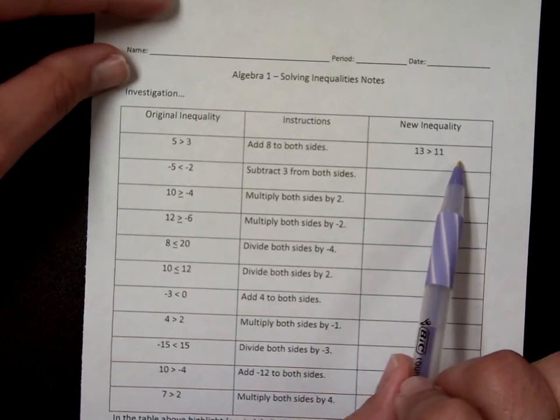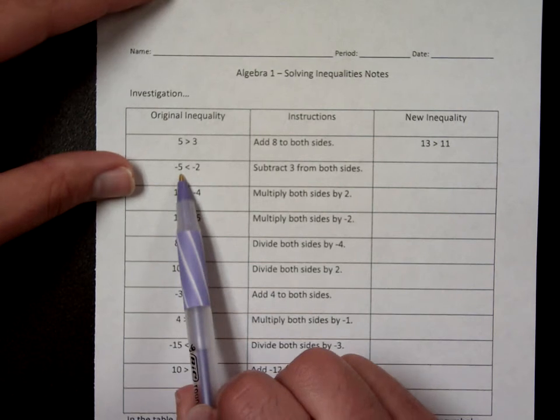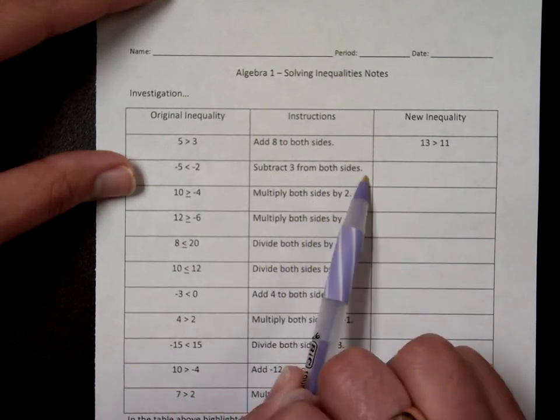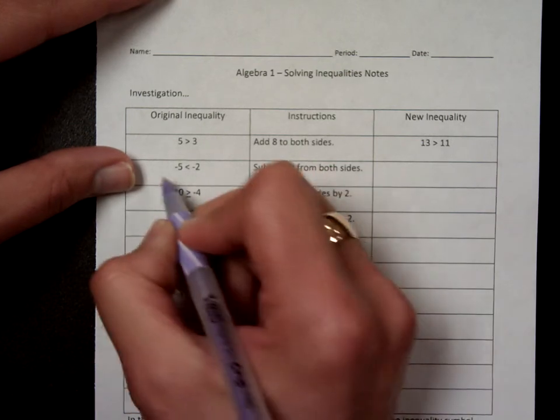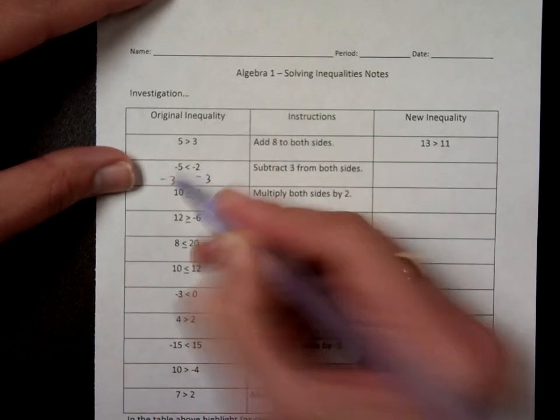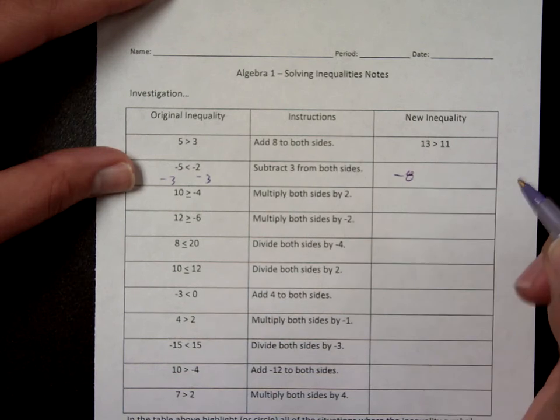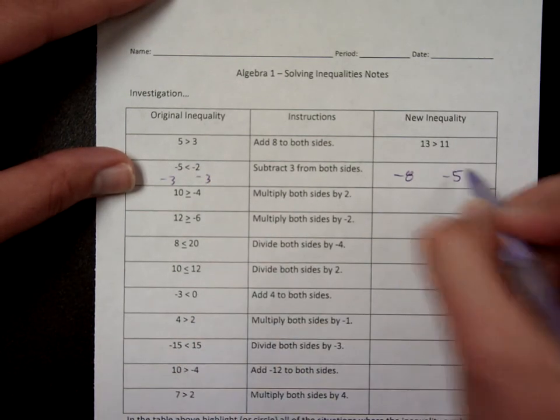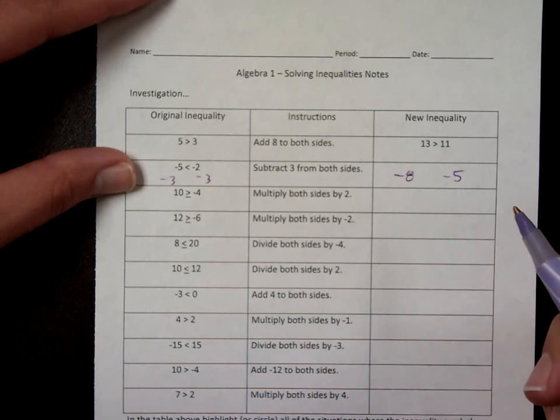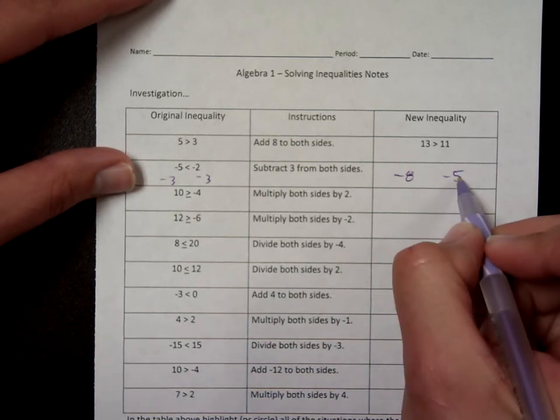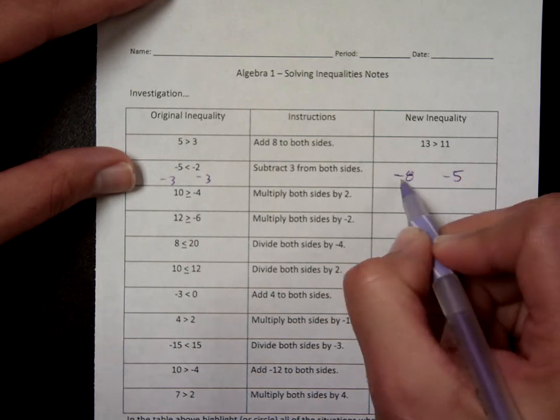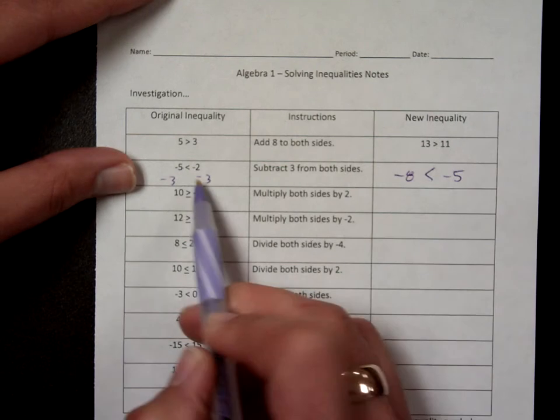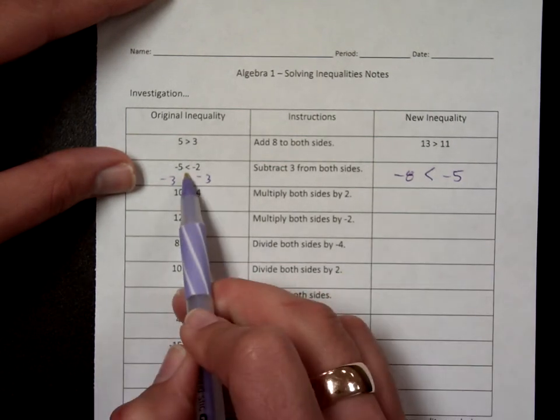Look at the first one. The first one's done for you. Look at the second one. I have negative 5 is less than negative 2. It says subtract 3 from both sides. Okay, so if I do negative 5 minus 3, I get negative 8. If I do negative 2 minus 3, I get negative 5. Now, which way does the inequality go? Well, negative 5 is bigger than negative 8, or negative 8 is less than negative 5. So, it goes this way, which is the same way it was in the original problem.